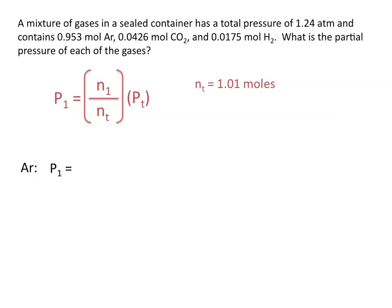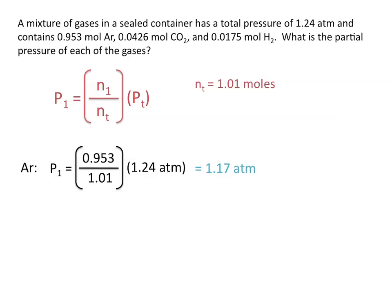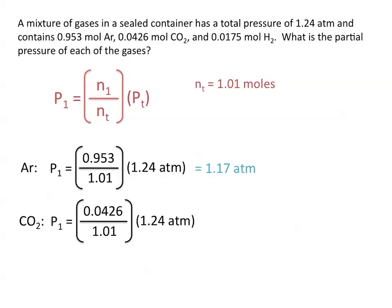Now to find the partial pressure, we take the mole fraction of that gas. The mole fraction of argon is 0.953 divided by 1.01 moles, multiplied by the total pressure of 1.24 atmospheres, so the partial pressure of argon is 1.17 atmospheres. Repeating the same for CO2: 0.0426 divided by 1.01, times 1.24, gives us a partial pressure of CO2 equal to 0.0523 atmospheres.